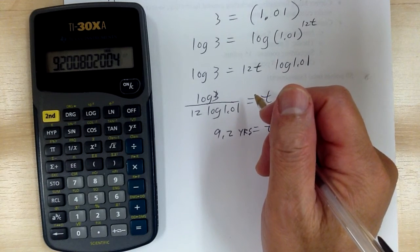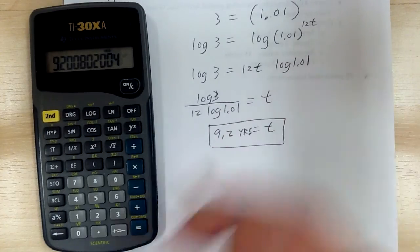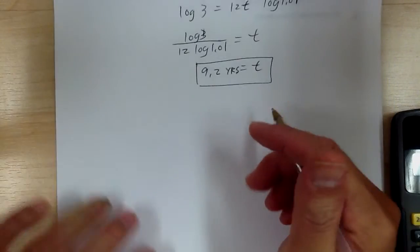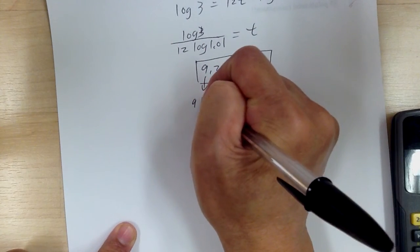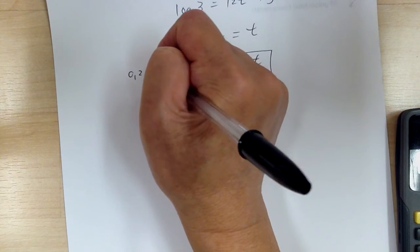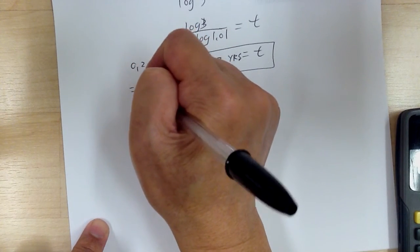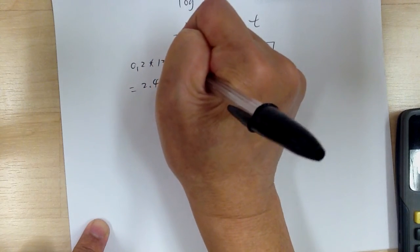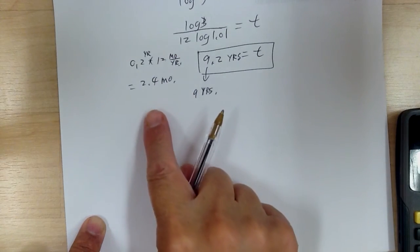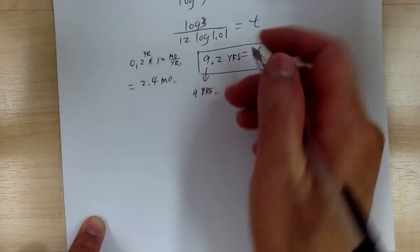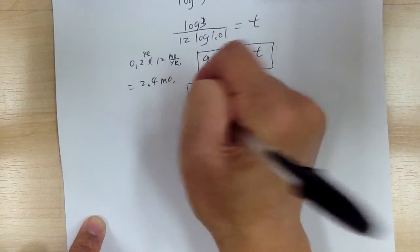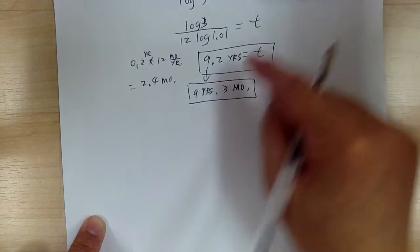If you want to convert to months: 9 years, and then 0.2 years times 12 months per year gives 2.4 months. In a bank they don't give half a month, so round up to 3 months. So it's 9 years and 3 months. On the test, either way is acceptable, but to be more exact use the month conversion.